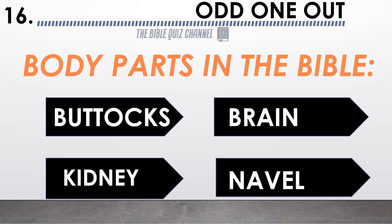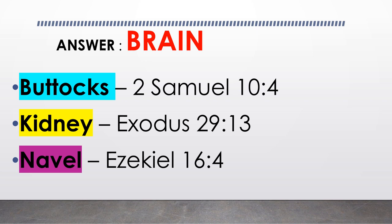Body parts in the Bible — buttocks, brain, kidney, navel. Guess the odd one out. The correct answer is brain.